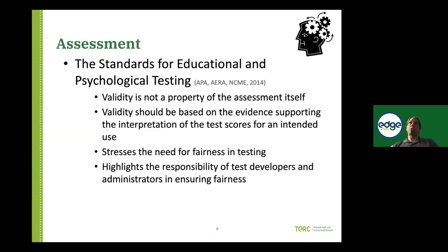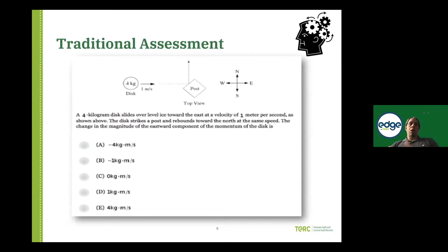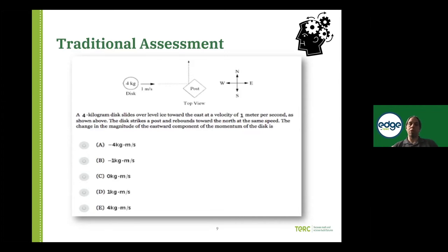These standards are in effect, but it's been challenging for the field to move in response to them, and a lot of traditional approaches don't lend themselves to broad access. A traditional physics assessment might have complex language to decode, lots of symbolic notation, high spatial reasoning demands, and require students to split attention between graphics and text — all pretty high demand tasks for neurodiverse learners.